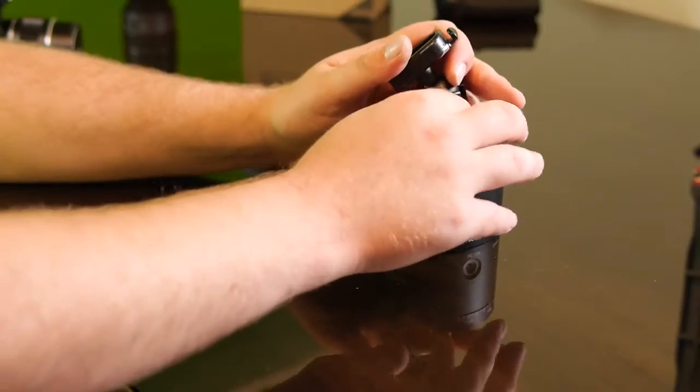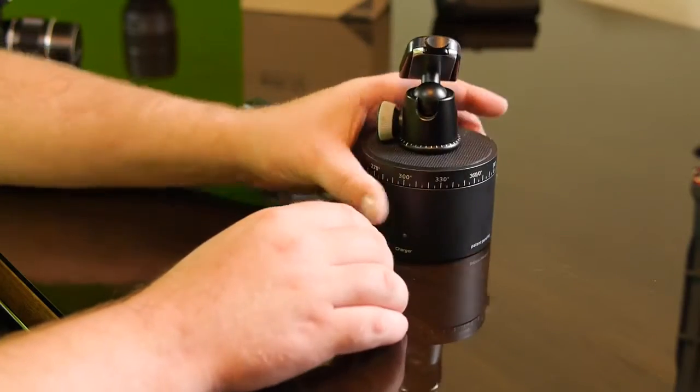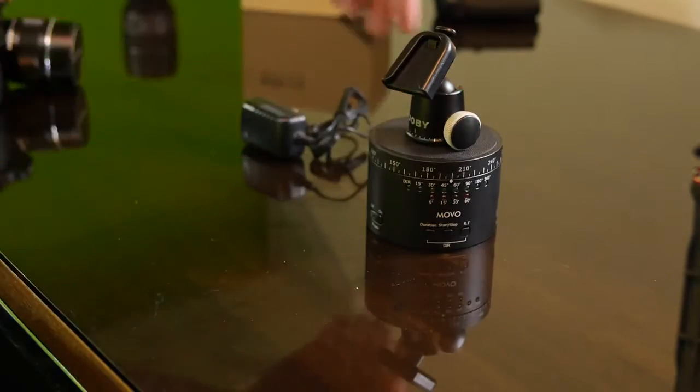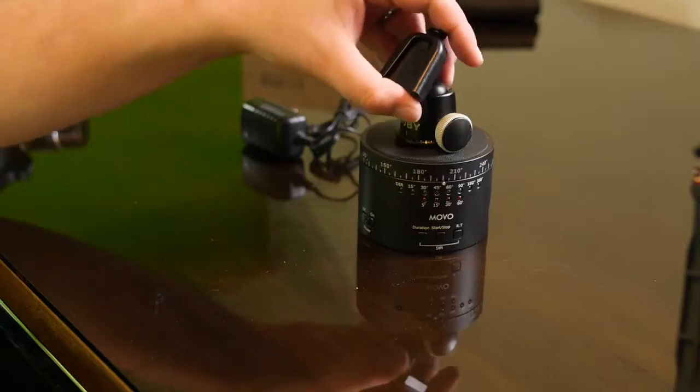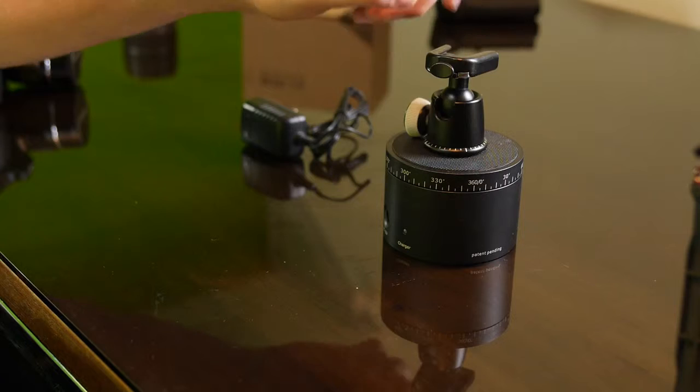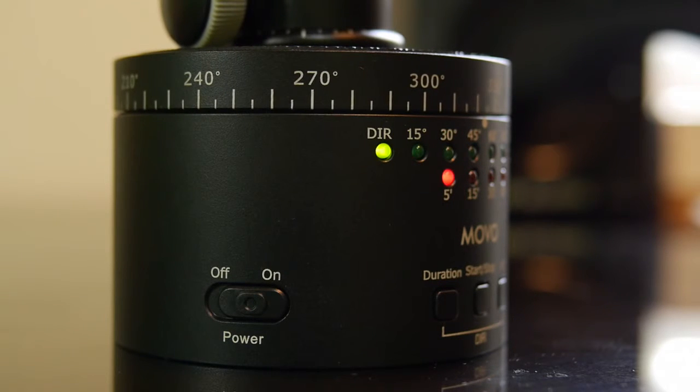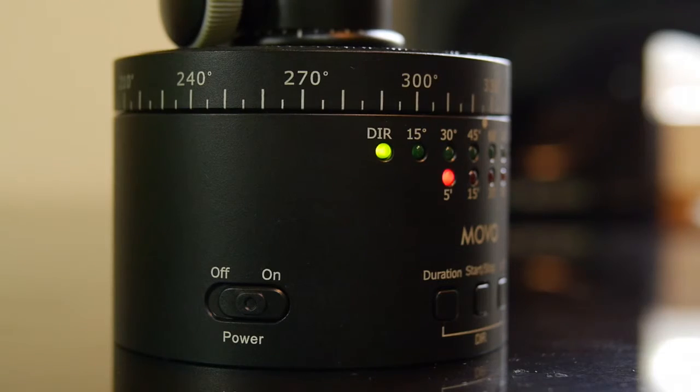The one thing I do wish they kind of included on this was a level, just so you could tell if the thing was level or not. But there's always different ones. I got one on the tripod or on the actual plate that goes onto the Joby.